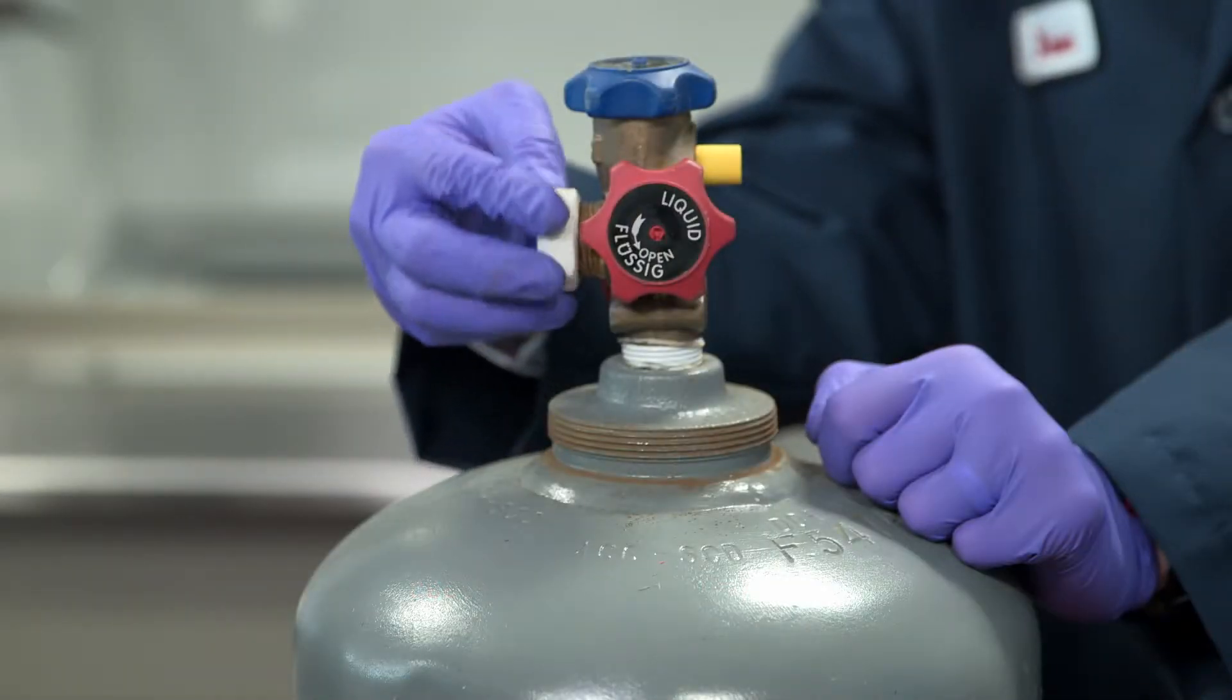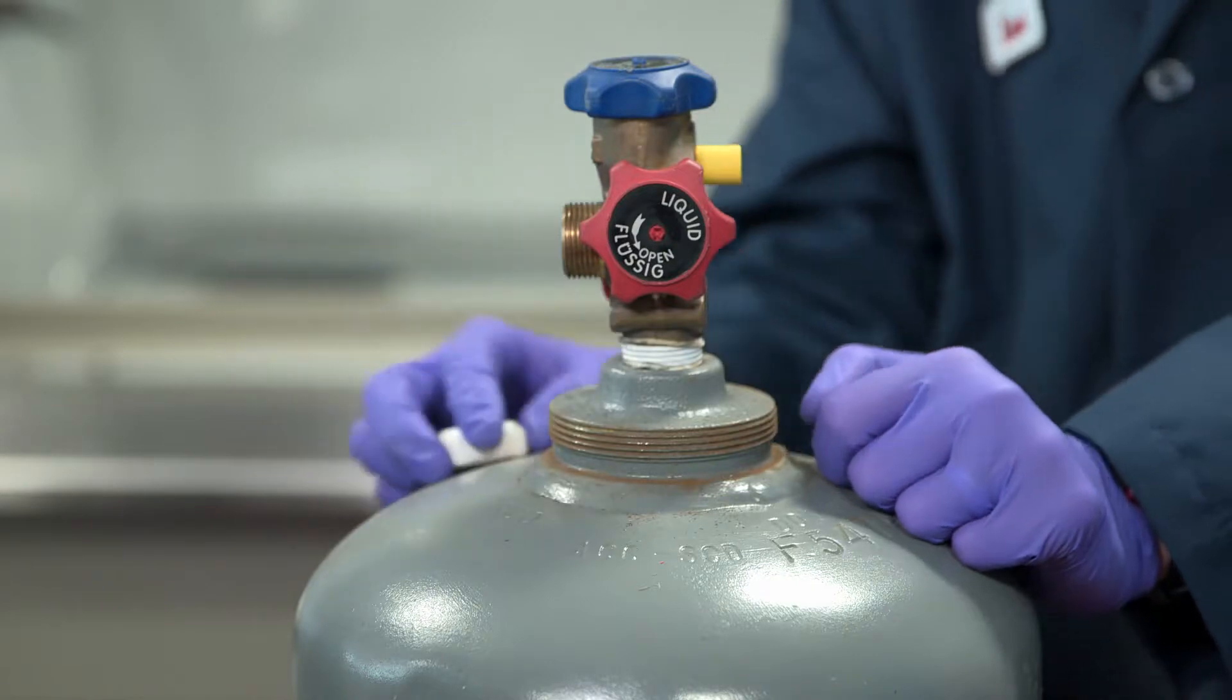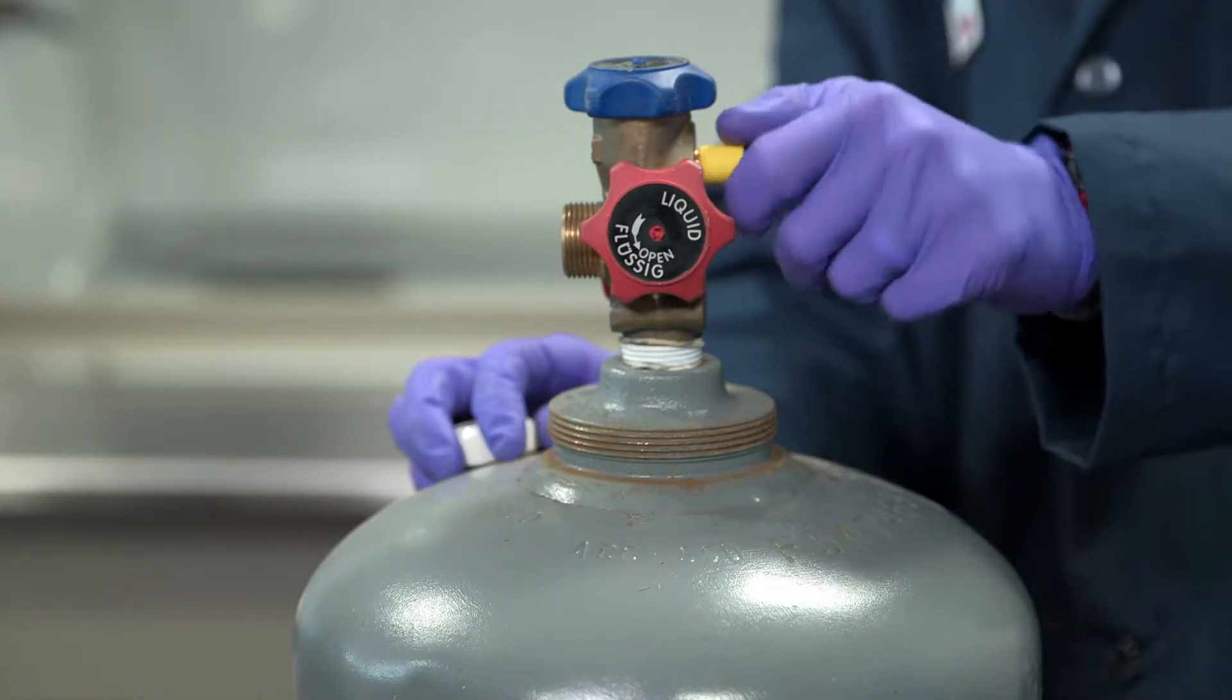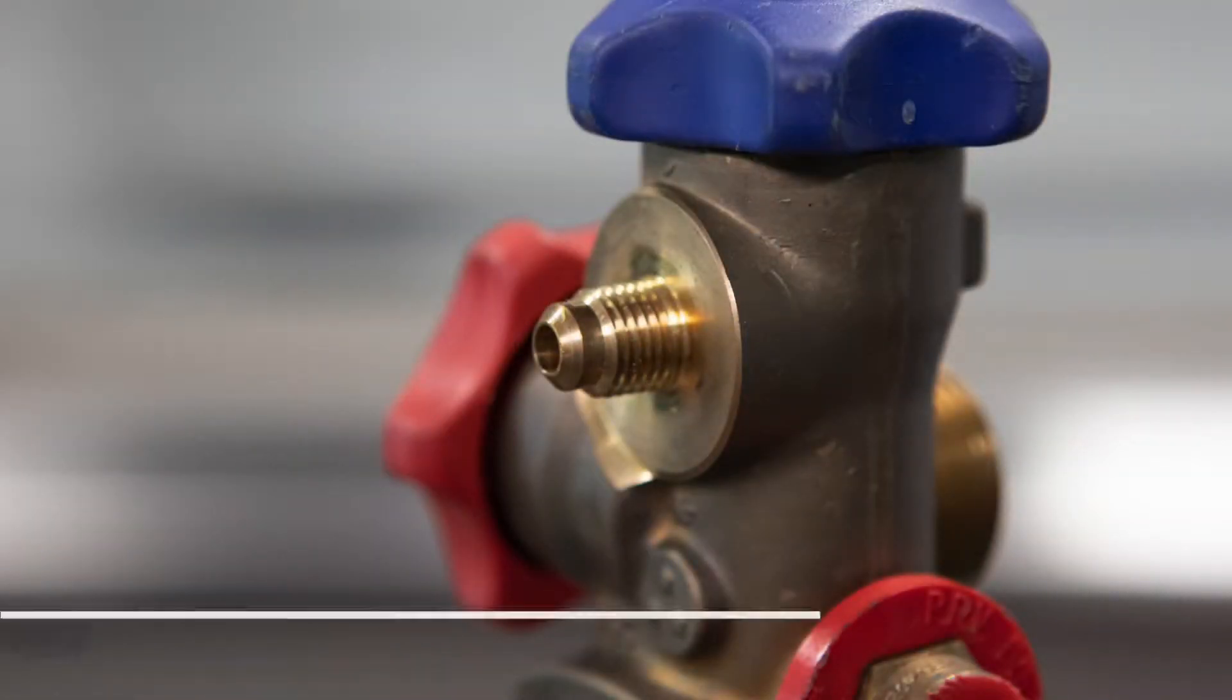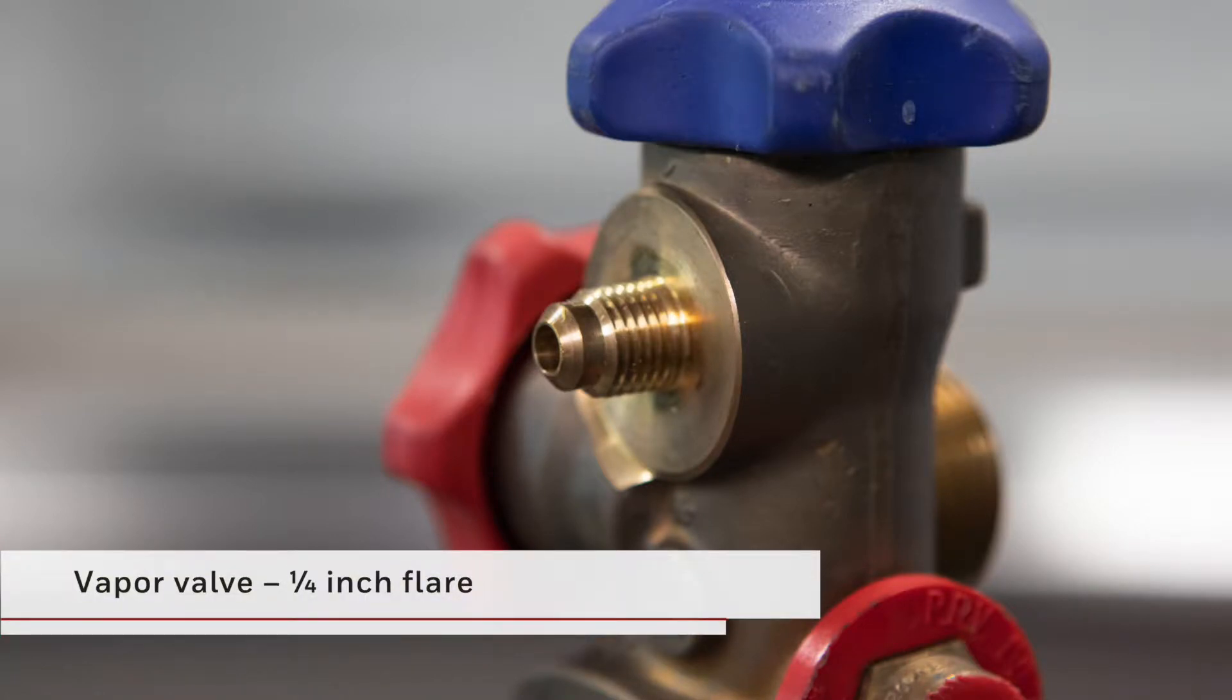Check that the cylinder has the proper fittings. The cylinder valve used to discharge the liquid blowing agent conforms to the compressed gas association. It has a CGA 660 connection. For the nitrogen supply, the connection is the vapor valve, which is a quarter-inch flare.